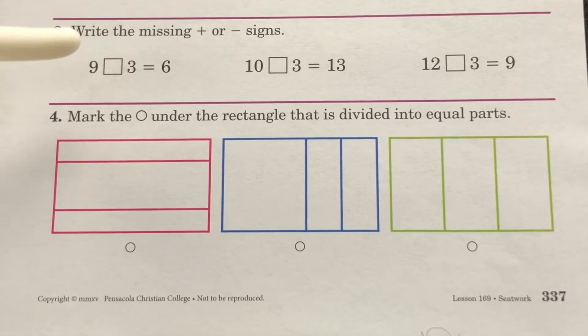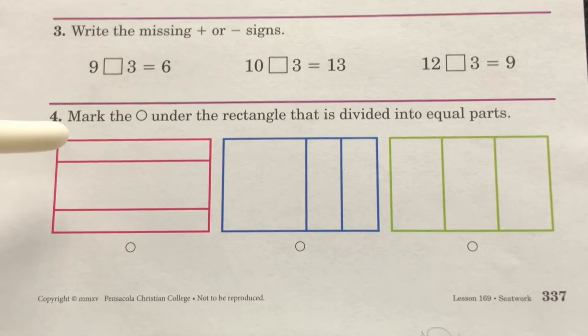Take a look at section 3. Write the missing addition or subtraction sign. Complete section 3. Take a look at section 4. Mark the circle under the rectangle that is divided into equal parts.